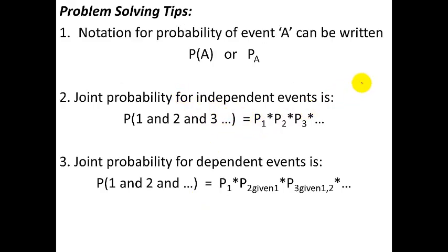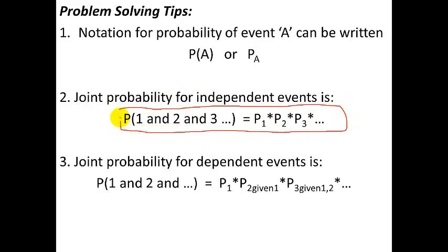Here are some problem solving tips. Notation is important for probabilities. The probability of event A happening is written as P(A) or P sub A. Joint probability for independent events — where one does not influence the other — is the product of all the individual probabilities. If you want all of the things to happen, you multiply the probability of the first by the probability of the second, by the probability of the third, and so on.